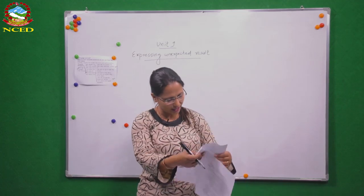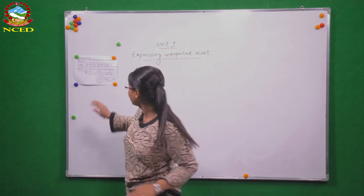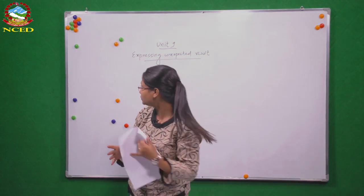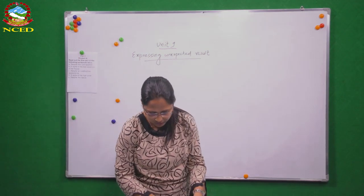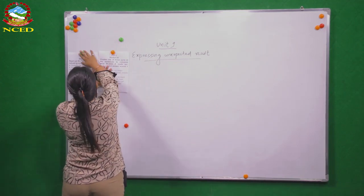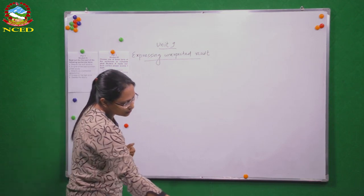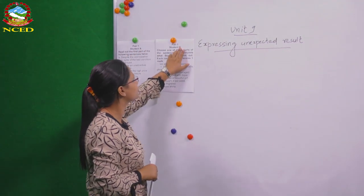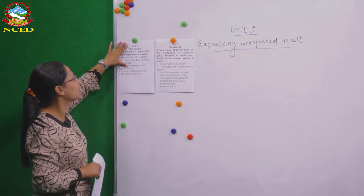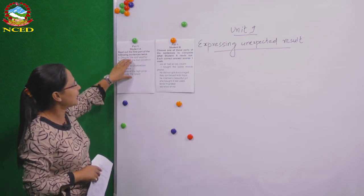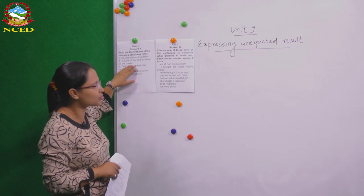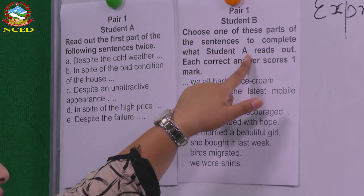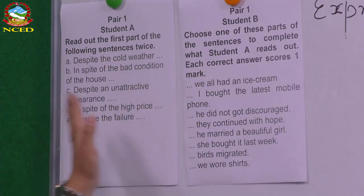Let's move on to the next speaking exercise on page number 104. You have to do this in a pair — one of you will be student A and the other will be student B. Student A reads out the first part of the following sentences, and student B has to complete the sentence choosing one of the options. If student B gives the correct answer, they score a mark. You can do this activity as a game.